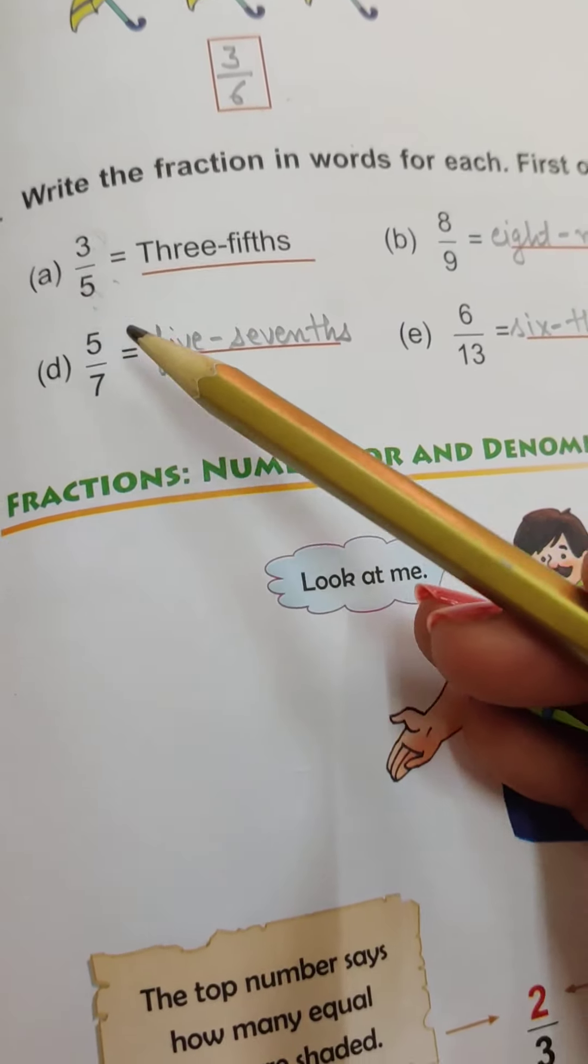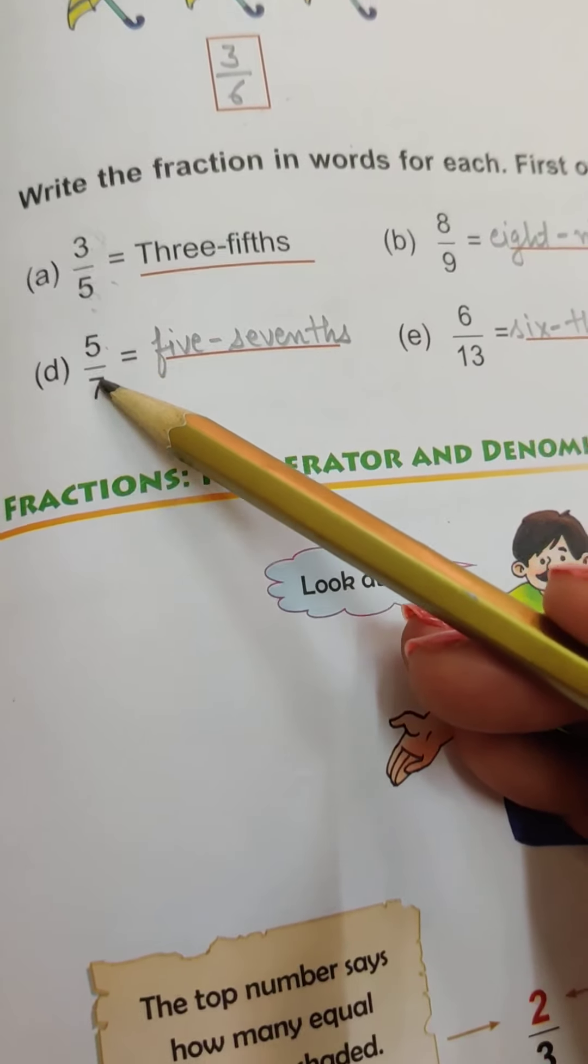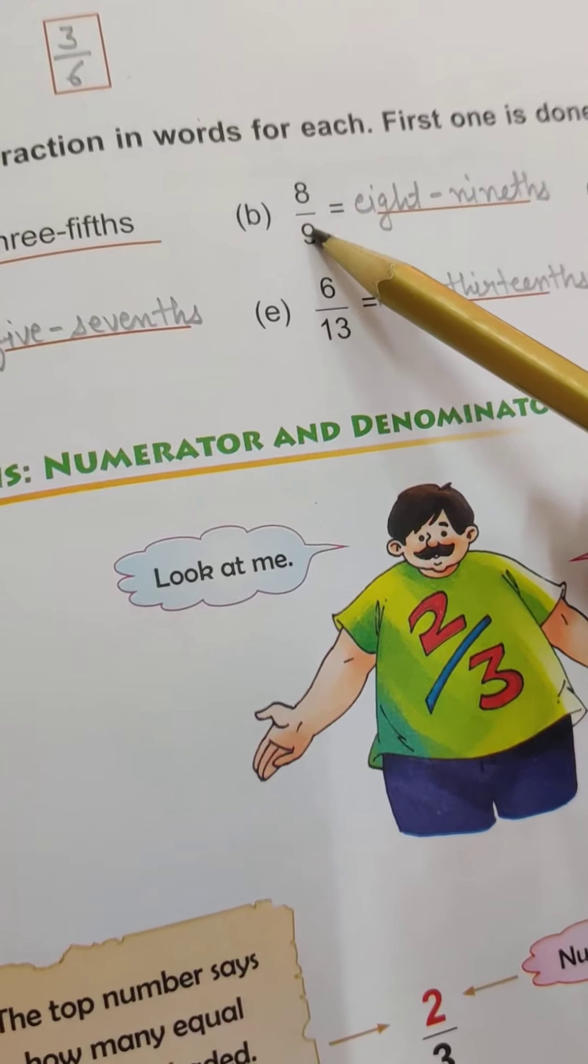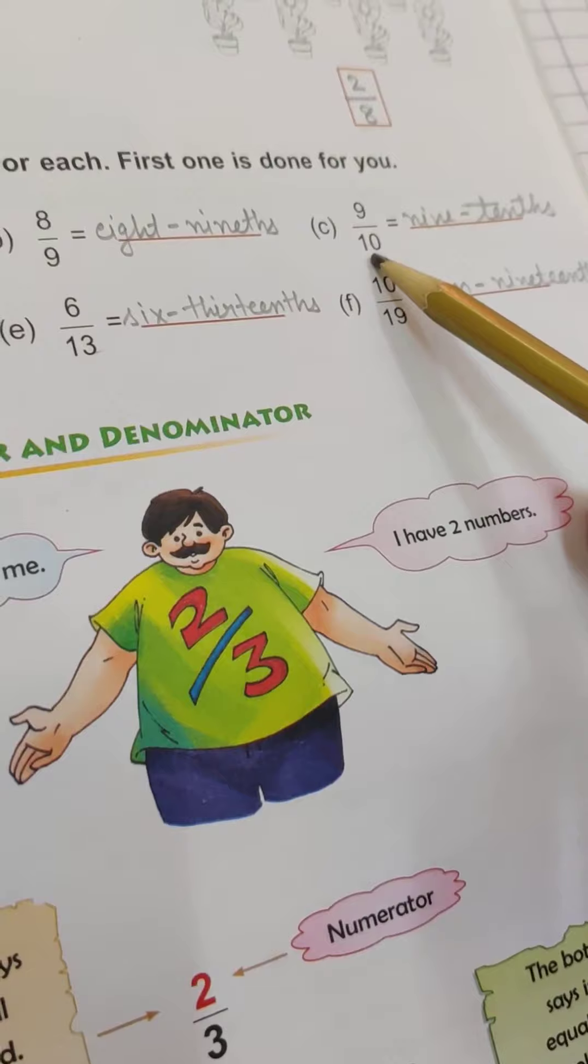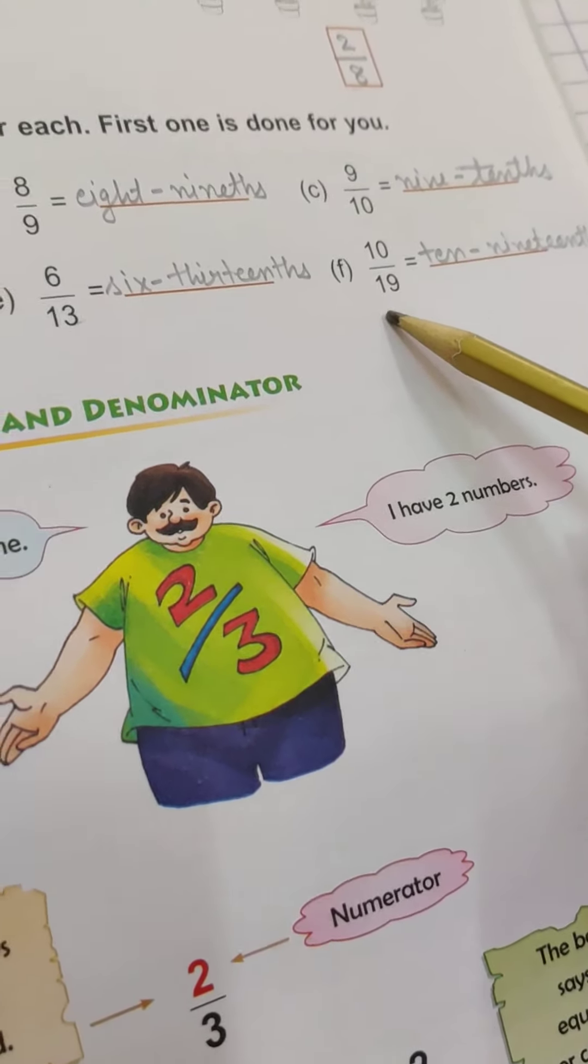Three-fifths. Next, 5 sevenths. Next, 8 ninths. 6 thirteenths. 9 tenths. 10 nineteenths. OK.